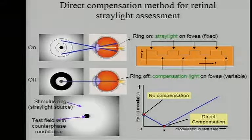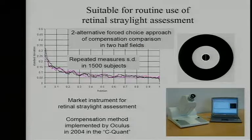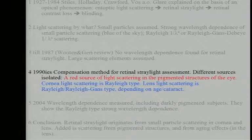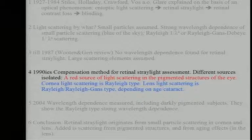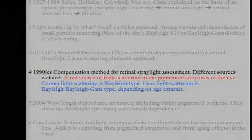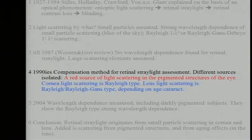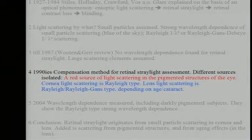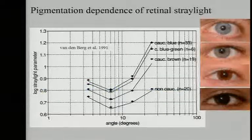Then we started our research. We found that there was an important, completely different colored source of light scattering in the eye — a red source of light scattering in the pigmented structures of the eye. Light reflected from the fundus and penetrating the eye wall is very red dominant. So there was an opposing spectral component to light scattering. On the other hand, we measured light scattering in the cornea, which is of the Rayleigh type.